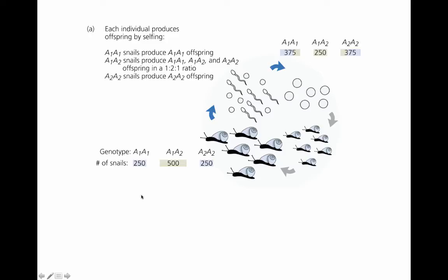And then these numbers are what you would predict based on those allele frequencies of 0.5. This is 1,000 individuals, and 250 of them are a frequency of 0.25, A1A1. 2PQ, so 2 times 0.5 times 0.5 is going to give you 0.5. And then Q squared, 0.5 squared, is going to give you 0.25, so the 250 individuals.